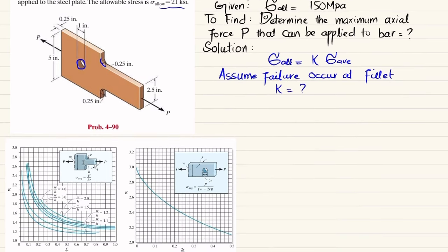We will find P for the fillet case first. We need the stress concentration factor K. Using the graph provided, we need the values r/h and w/h. Here, w is the maximum height and h is the smallest height. So w/h = 5 divided by 2.5, which gives 2. For r/h, r is the fillet radius 0.25 and h is the minimum height 2.5.